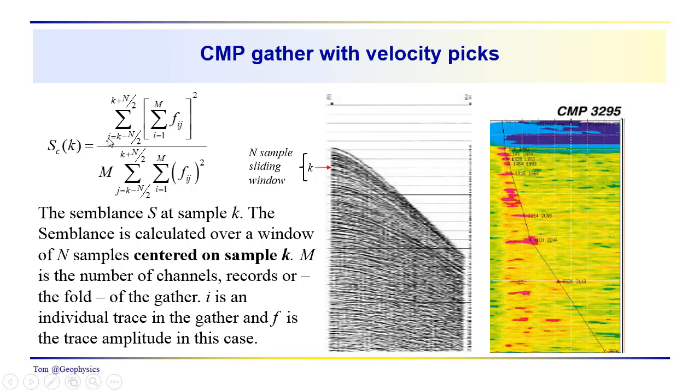j, the subscript j, refers to the sample number within the window, which goes from minus n over 2 to plus n over 2. So we have k minus n over 2 to k plus n over 2.